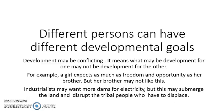Conflicting means what may be development for one may not be development for the other. For example, if we talk about a girl in a family who expects as much freedom and opportunity as her brother, her brother may not like this. So this is the first example regarding how different persons can have different developmental goals.